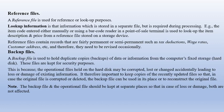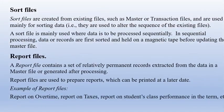A backup file is used to hold duplicate copies — backups of data or information from the computer's fixed storage, that is the hard disk. These files are kept for security purposes, because operational files on the hard disk may be corrupted or accidentally changed. It is therefore important to keep copies of recently updated files so that if the original file is corrupted or deleted, the backup file can be used to reconstruct it.